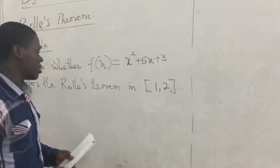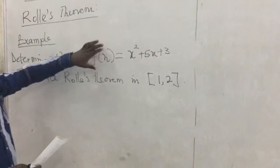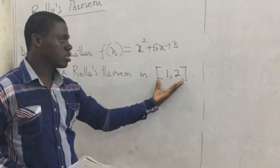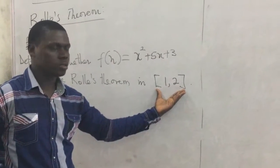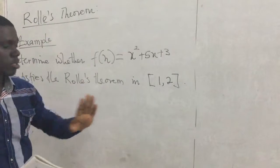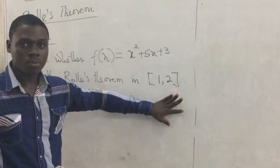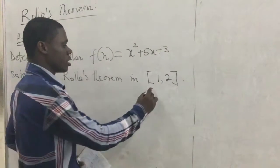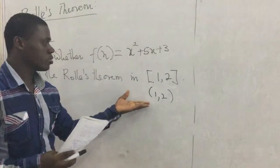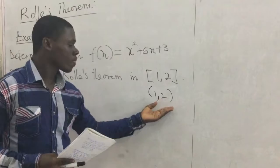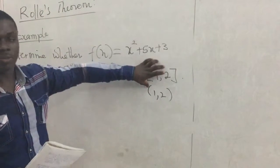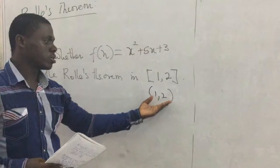The theory says that the given function should be continuous on the closed interval, and the first derivative of the function should exist in the open interval. So the open interval here becomes (1, 2), and the first derivative of the function should exist in that open interval.